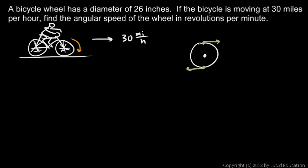That 30 miles per hour is our V for this problem — the linear velocity of a point moving in a circle. So now think of the problem this way: in one minute, you're going 30 miles per hour, so you travel 0.5 miles in one minute.